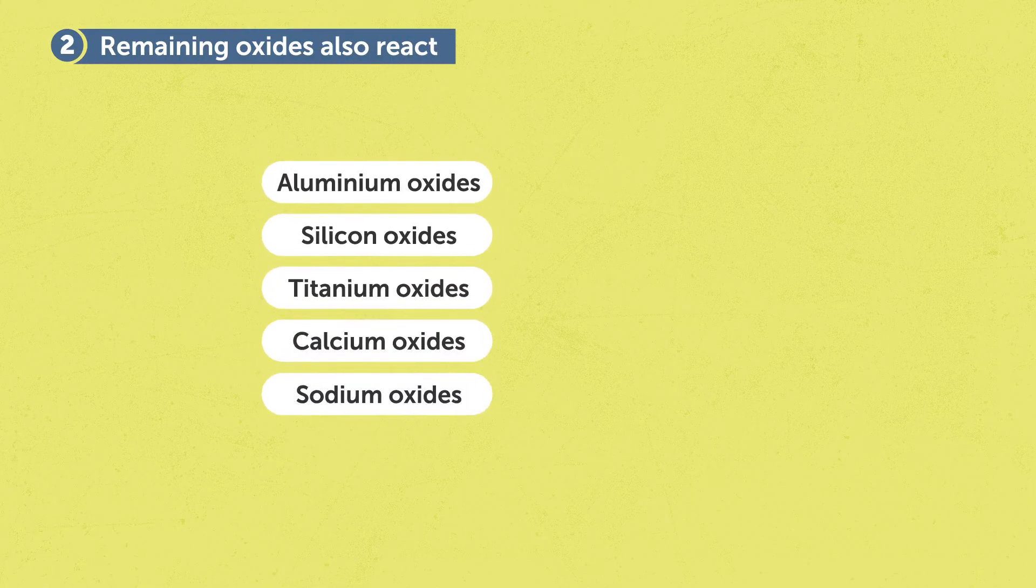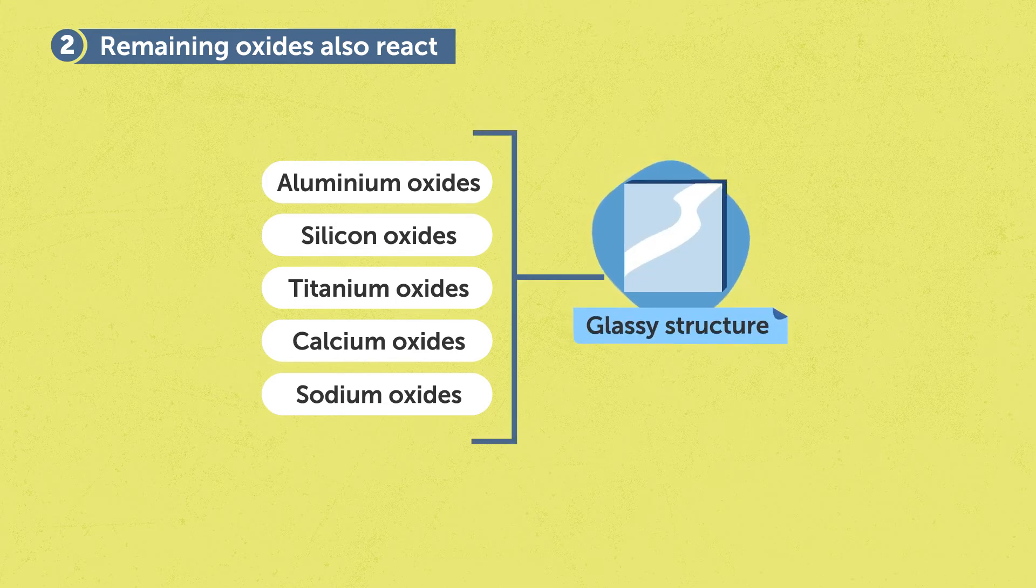This metal is pure enough at this point already to be used for steel production. We also found that the remaining oxides react among themselves and transform into a glassy structure when solidified.